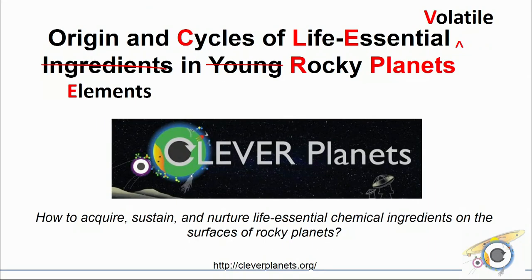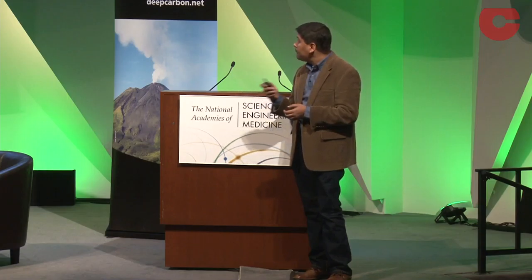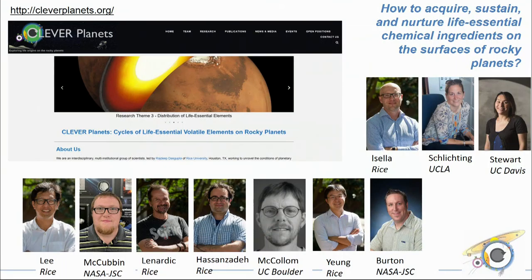We started with the theme of origins and cycles, but then someone at NASA asked me what the name of my team was. So I tweaked our project title and came up with the name Clever Planets — Cycles of Life Essential Volatile Elements in Rocky Planets — while keeping the research questions the same. You can visit us at cleverplanets.org and follow our research activities. It's an interdisciplinary team of 11 co-investigators and several collaborators spanning at least five institutions, including Rice University.